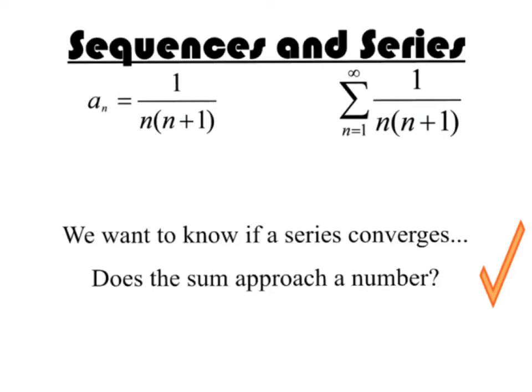Now, we want to start talking about the difference between sequences and series. A sequence is simply the pattern of numbers that we've been describing. For instance, 1 over n times (n+1), if we start at n equals 1. If we start there, then we have 1 over 1 times 2. Our next term is 1 over 2 times 3. Our next term is 1 over 3 times 4, and so on. This is a sequence. It's the pattern.